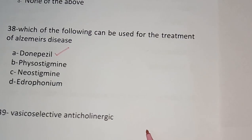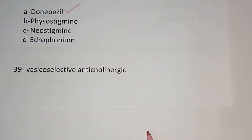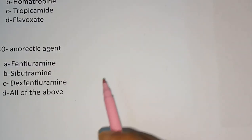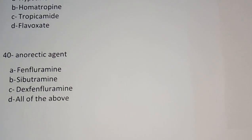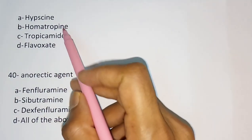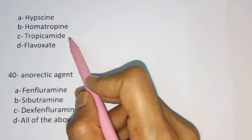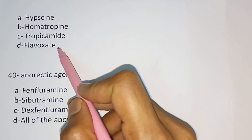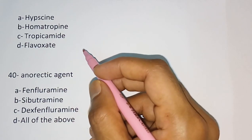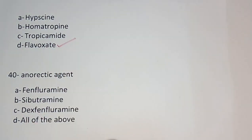Question number 39: Vesico-selective anticholinergic drug — options are: Hyoscine, Homatropine, Tropicamide, Flavoxate. The correct answer is: The vesico-selective anticholinergic drug is Flavoxate.